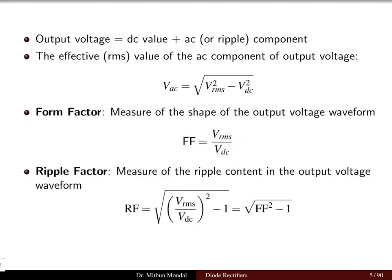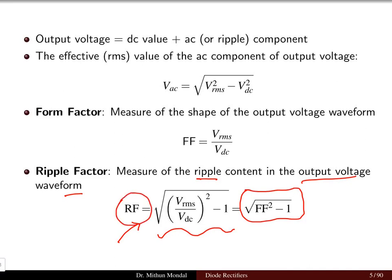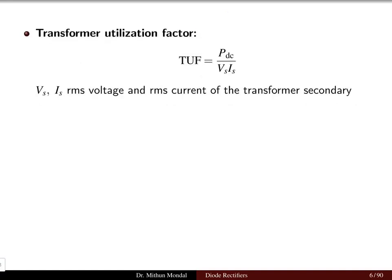The ripple factor, which is the measure of the ripple content in the output voltage waveform, is given by √((V_RMS / V_DC)² − 1), or equivalently √(FF² − 1) where FF is the form factor. The ripple factor measures how much ripple or AC quantity is present in the output DC waveform.